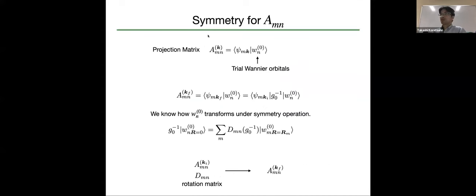Next, let us consider the symmetry for the projection matrix, which is defined using the initial trial orbital. We consider the projection matrix in the full Brillouin zone, and we can rewrite it using the function in the reduced Brillouin zone. We know how the orbitals transform under the symmetry operation, which can be written using the so-called rotation matrix. Using this equation, we can rewrite this using the projection matrix in the reduced Brillouin zone and the rotation matrix.